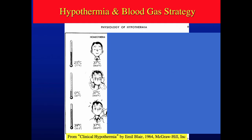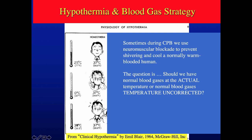Consider the homeotherm — warm-blooded animals. Whether it's mild outside at 77°F, cold at zero degrees, or very hot, we maintain a body temperature of 37 degrees through shivering, sweating, and other mechanisms. Through a wide range of environmental temperatures, we maintain 37 degrees.